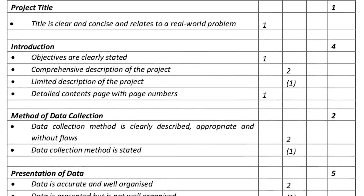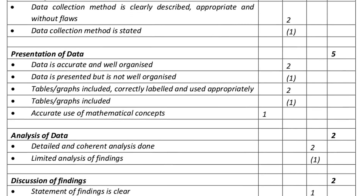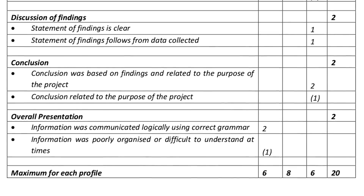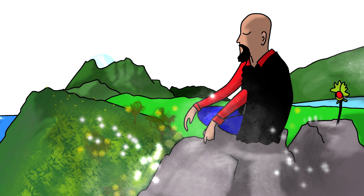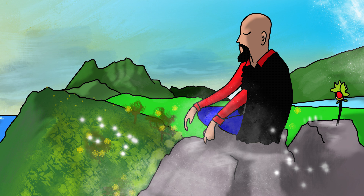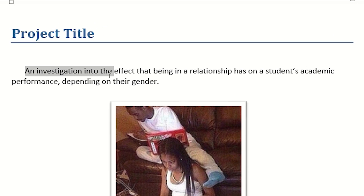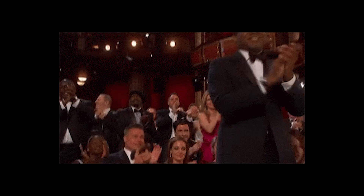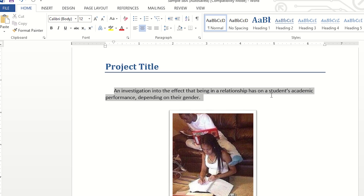Tip number one: always check the mark scheme before you begin any of your projects. This is what the CSEC Maths mark scheme looks like — I did a video examining this already. The bulk of marks are in the presentation of data, so we're gonna bring our A game for that section. For the project title, mine is: 'An investigation into the effect of being in a relationship on a student's academic performance, depending on gender.' Full marks — it's clear, concise, and relates to a real-world problem.